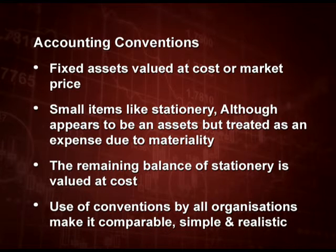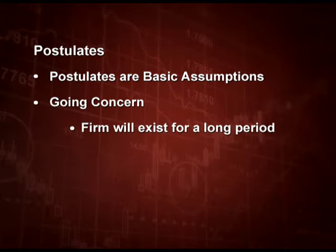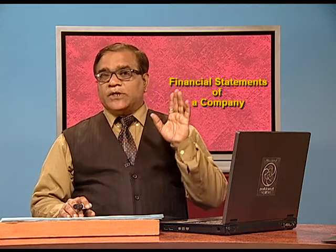Use of these conventions by all organizations makes it very comparable, simple and realistic. The third point in the nature of financial statements is postulates. Postulates are basic assumptions which we make while doing our accounting, like going concern assumption, money measurement assumption and all these things. Going concern means we assume that the firm will exist for a very long period of time — that is the foreseeable future. Money measurement means transactions are recorded at historical cost and in terms of money only. If there is no monetary value which can be attached, it will not be recorded in the accounts.